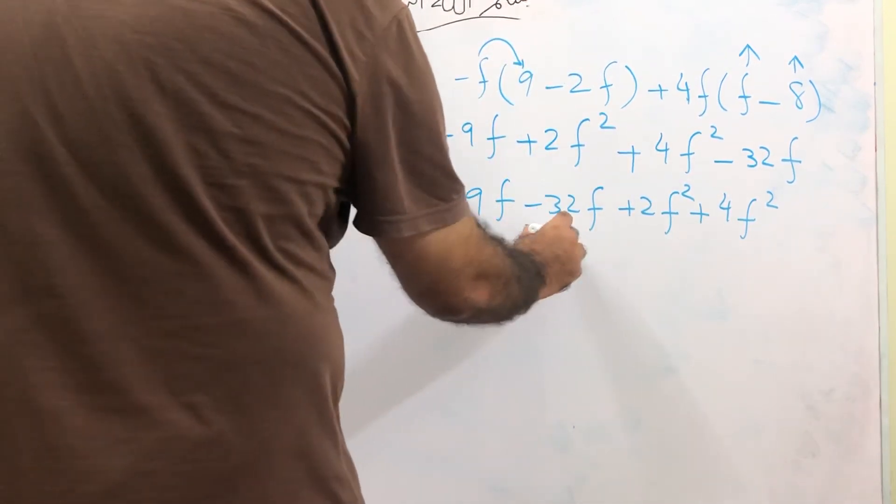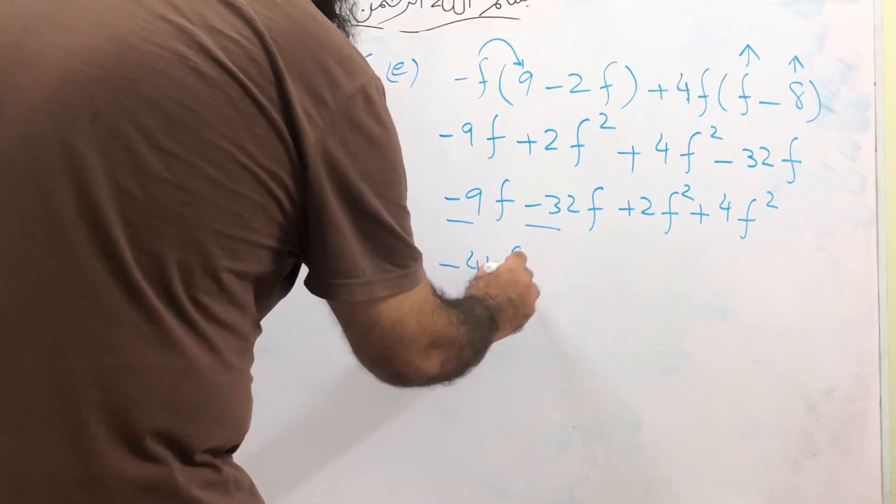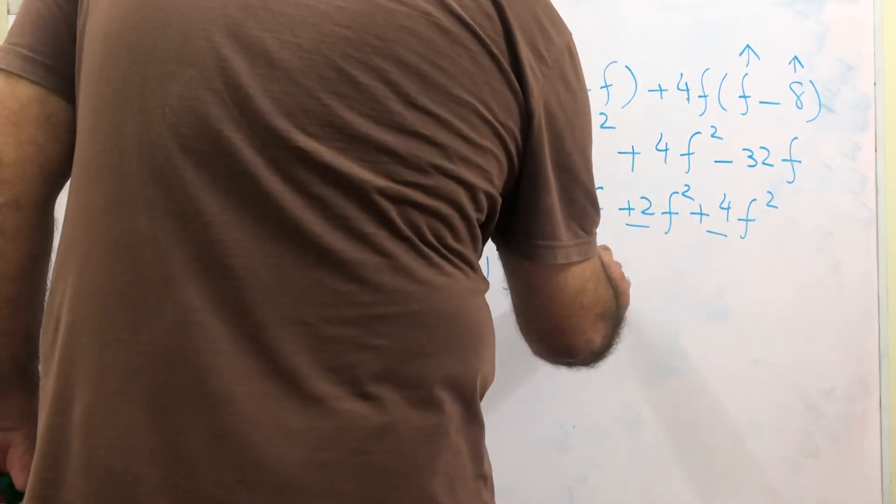This is minus 9, this is minus 32, it becomes minus 41f. This is plus 2, plus 4, plus 6f square. This is the answer.